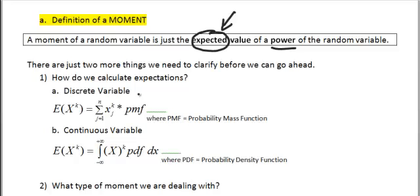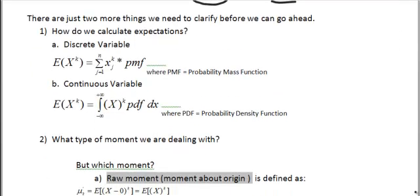Well, it turns out it's not that complicated. For a discrete variable, we calculate expectation by taking the values that the random variable can take, raise it to the power of the moment. So, if we are looking for the first moment, then this here would be 1. If we are looking for the second moment, then k would be 2. And we just have to times it by the probability mass function. This is for the discrete random variable. For continuous random variable, all we have to do is just take this integral of this random variable raised to the power of the moment times its PDF, where PDF stands for probability density function.